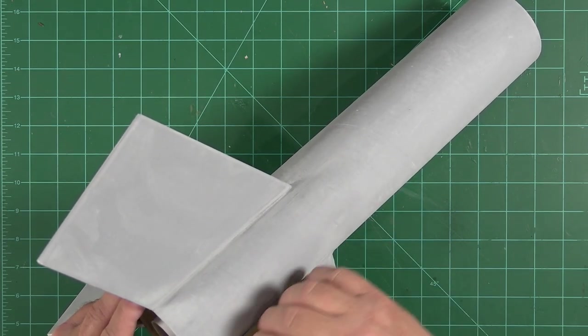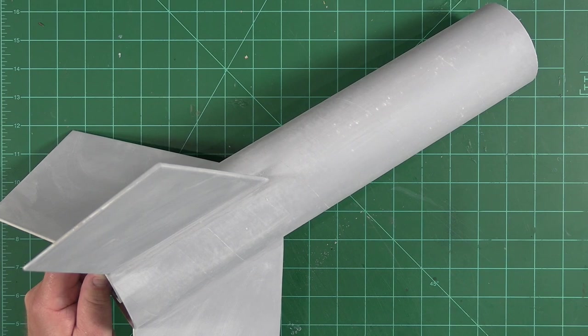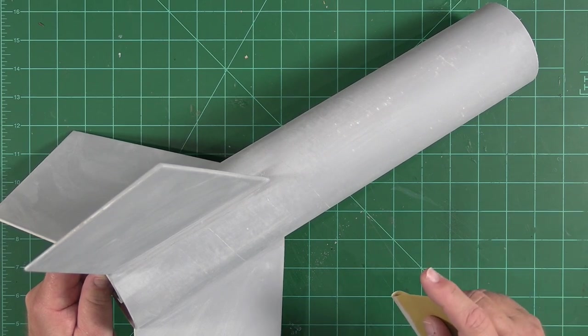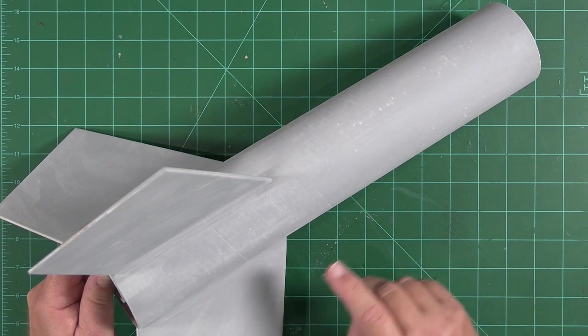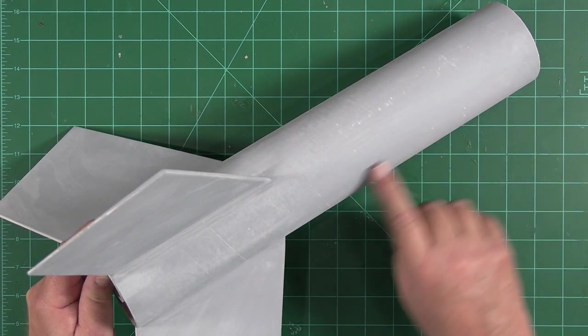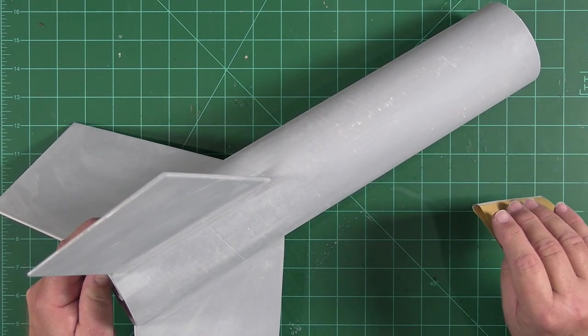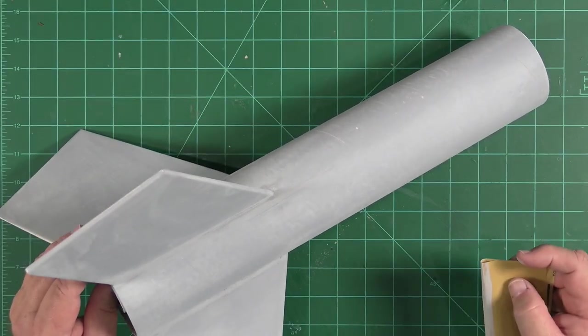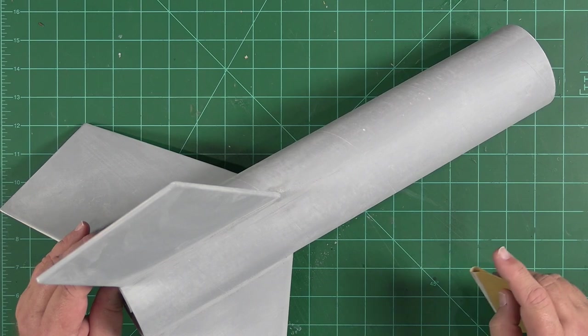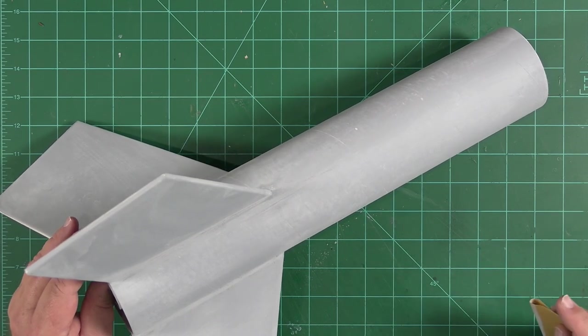Again, we're looking for the color to change. Now, you can do this prime and sand cycle as many times as you want. If I were doing a scale model, I would do it until the seams in the airframe were invisible. For a sport rocket, though, two cycles is more than adequate for me. After I finish sanding this out, we'll move on to our next step.